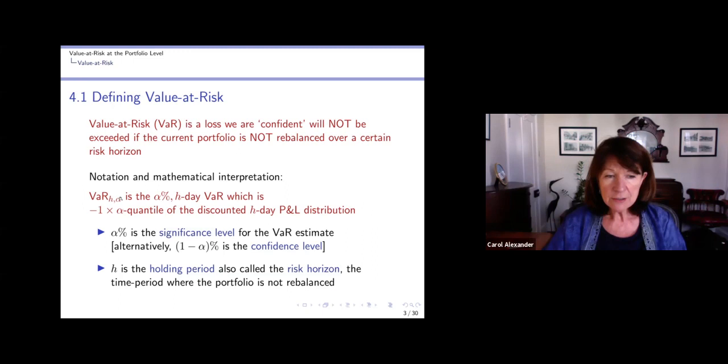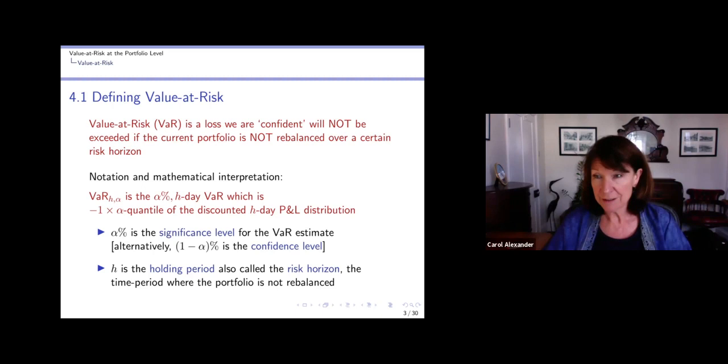So VaR_h,alpha is the alpha percent h-day VaR, and that is minus one times the alpha quantile of the discounted h-day P&L distribution. So what are these two parameters? Alpha is our significance level, or you could say (1-alpha) is the confidence level. So a 1% VaR means that we are 99% confident that we will not lose more than this amount if our portfolio is not rebalanced. Or a 5% VaR means that we're 95% confident.